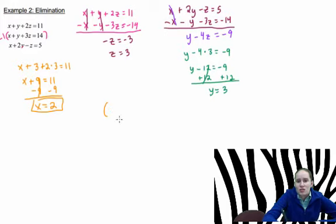So our point here, x, y, z, is 2, comma 3, comma 3.